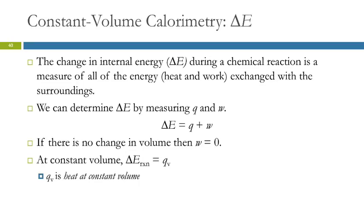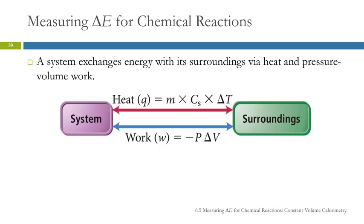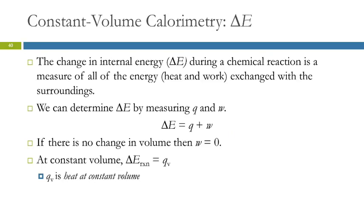We can look at what happens at constant volume. So remember that delta E is the change in internal energy. The change in internal energy is the heat plus the work. The work is negative P times the change in V. If the change in volume is zero, what does the work equal? Zero. So with constant volume, W equals zero.